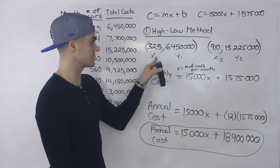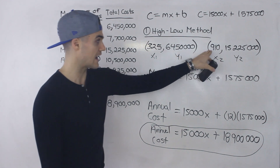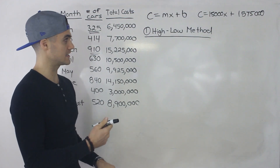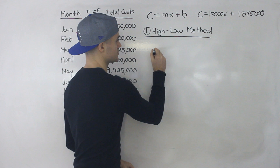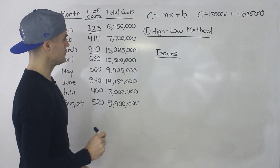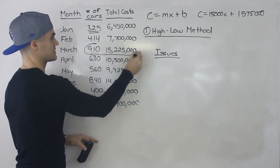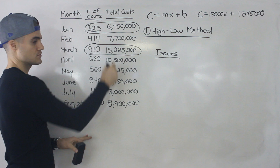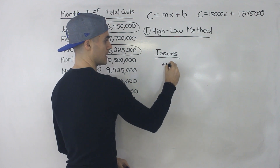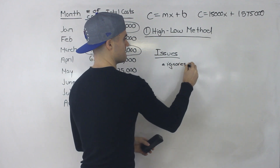To summarize the high-low method: get two points — the lowest output with its corresponding cost, and the highest output with its corresponding cost — then find the equation between those two points. Before moving on to the second method, there are some potential issues with the high-low method. If you notice, we completely ignored all of the middle values — we only used the highest and lowest output points, and none of the other data was used to come up with the equation.